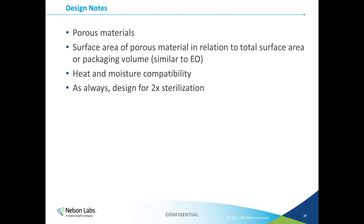Let's look at a few design notes for steam sterilization. In order for the kill mechanism to take place, steam must come into contact with the medical device and condense back into water, releasing the latent energy — so porous material is necessary and essential. For the same reason we need a good ratio of porous to non-porous material in EO, we have the same requirements for steam. The more porous your packaging, the more opportunity steam has to penetrate. The materials selected for packaging must be compatible with high heat — we typically see about 121 to 132 degrees Celsius with humidity and moisture. And always design for double sterilization in case of a failure and need to re-sterilize — the same as for every other sterilization mode.